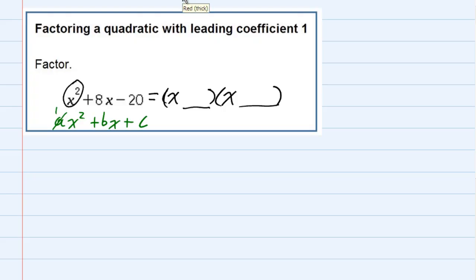First of all, we need the two numbers to multiply to give us negative 20, but we need them to add up to a positive 8. So two numbers that multiply to be negative 20, and those same two numbers have to add up to give us a positive 8.